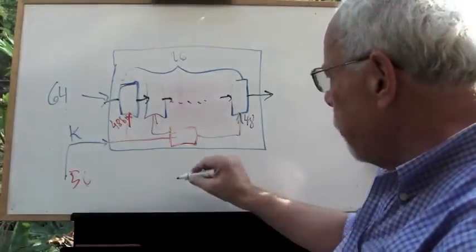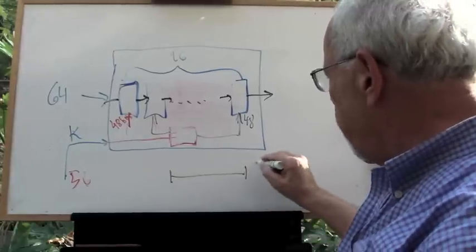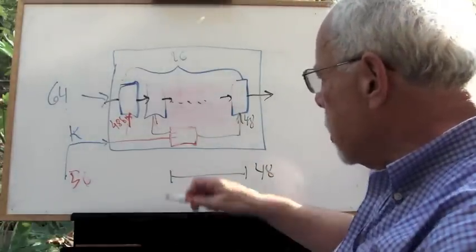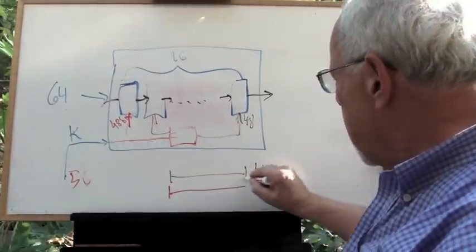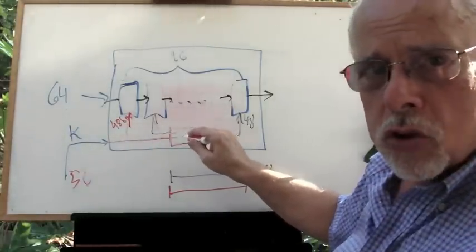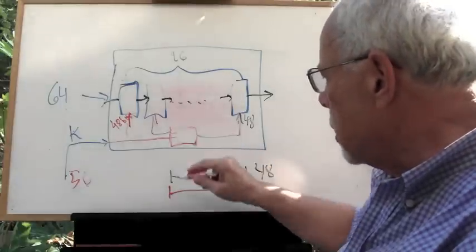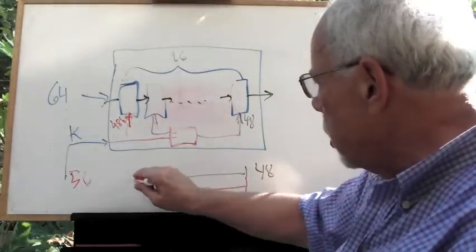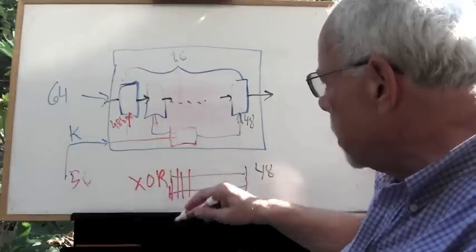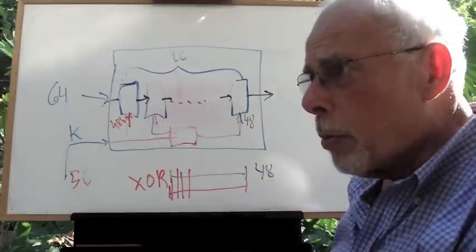And we take the 48 bits of the plaintext and match them with the 48 bits that are fed from the key production mechanism. Then we process an XOR bit by bit by bit. You remember the XOR operation?